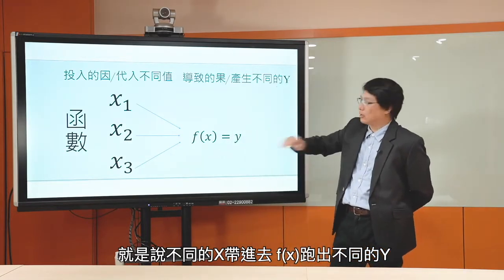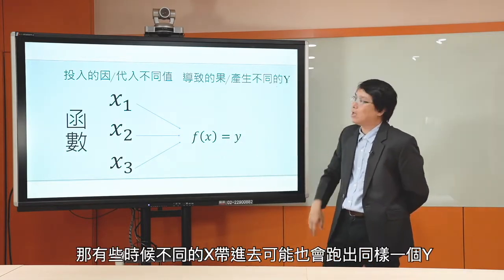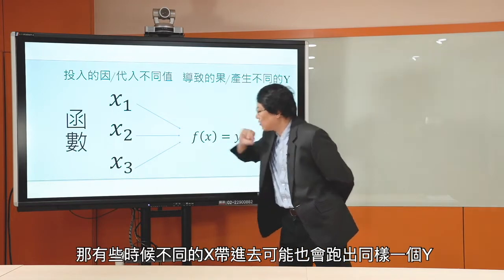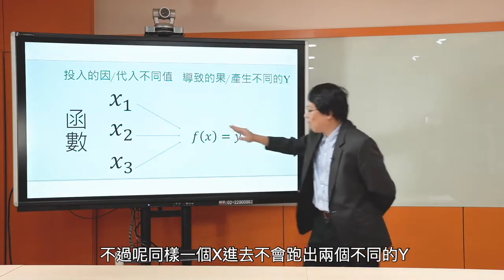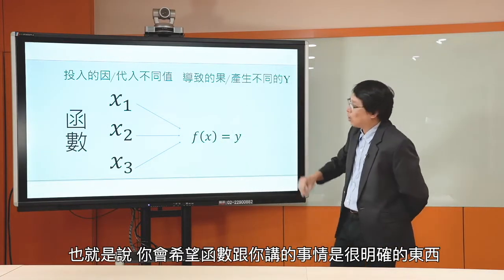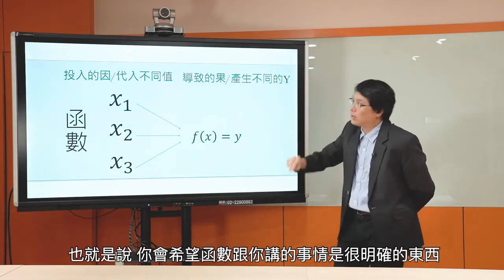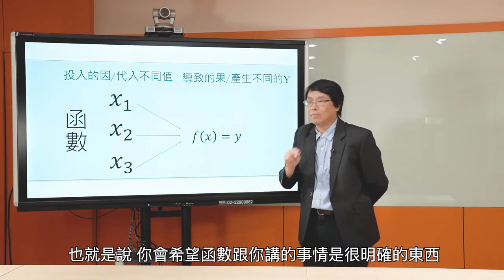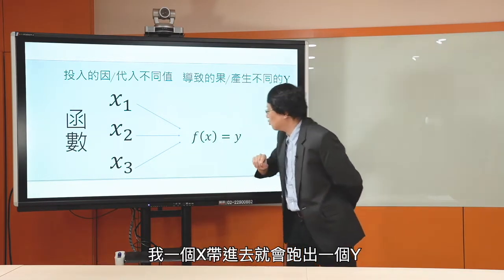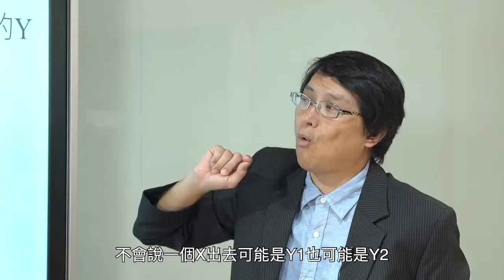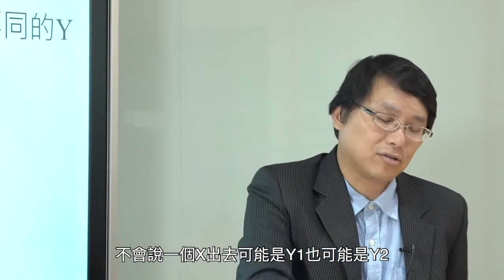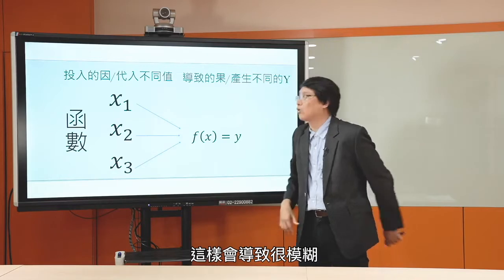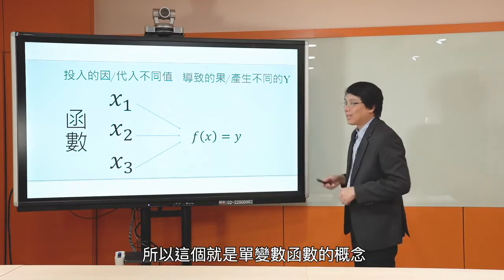我们会从最基本的单变数函数来开始说。单变数函数讲的就是说一个x跟另外一个变数y之间的关系，通常谈的是因果关系。也就是说当我把x带入不同的值的时候，会导致不同的y出来。同样一个x进去不会跑出两个y出来，也就是说一个x带进去它就会跑出一个y，这样才是个很明确的东西。